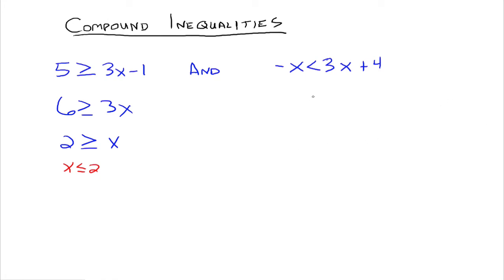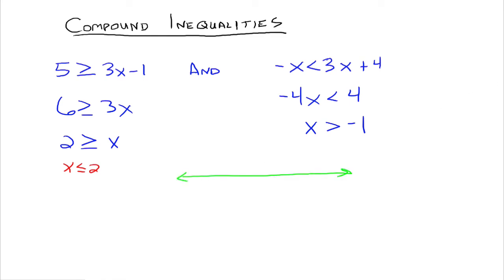Now let's do the one on the right. Subtract 3x from both sides: negative x minus 3x is negative 4x is less than 4. Divide both sides by negative 4 — because it's a negative number, switch the inequality symbol around — and we have 4 divided by negative 4, which is negative 1. So we want numbers that are less than 2, and numbers that are greater than negative 1.